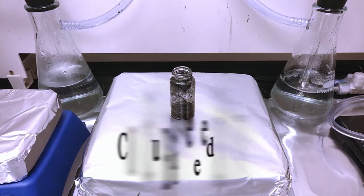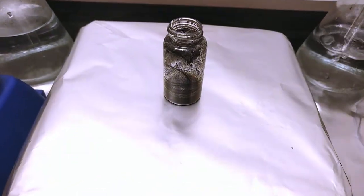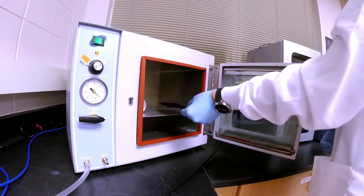The cathode slurry is made by mixing the maxene powder, acetylene black conductive additive, and the binder. It is then cast on a current collector and dried in a vacuum oven overnight.